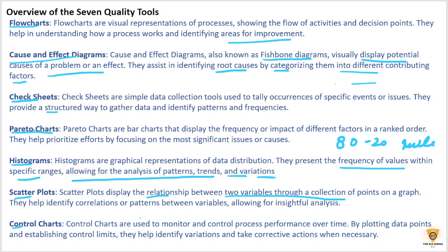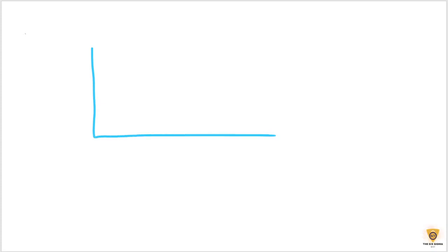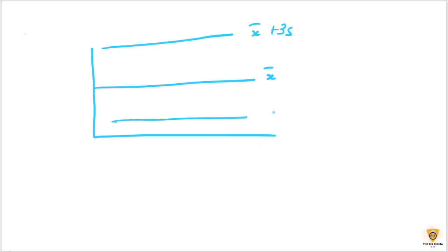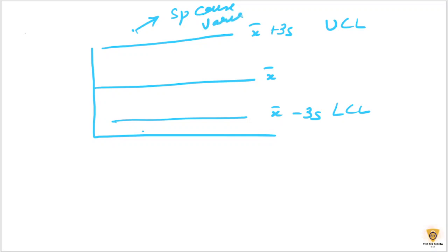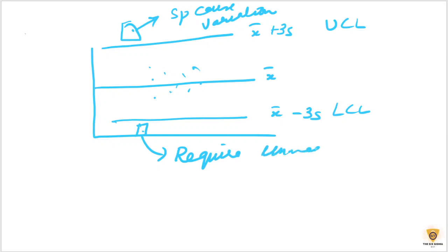Control charts are used to monitor and control process performance over time. By plotting data points and establishing control limits — x-bar plus 3 standard deviations for the upper control limit and x-bar minus 3 standard deviations for the lower control limit — they identify variation. Anything beyond these limits is a special cause variation and requires immediate attention.